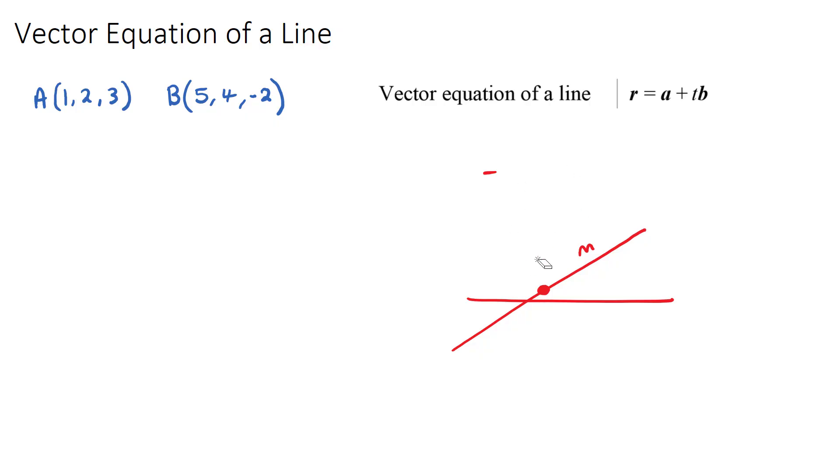So the vector equation of a line, the general formula, which is given in our formula booklet, is this one here, where r equals a plus tb. And it's very similar to y equals, I'm going to put the c first, c plus mx. Notice that c was some point that our line passed through, and a is actually going to be a position vector that our line passes through.